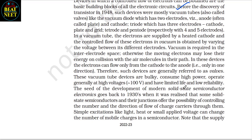In a vacuum tube, the electrons are supplied by a heated cathode and controlled flow of these electrons in vacuum is obtained by varying the voltage between its different electrodes. Vacuum is required in the inner electrode space, otherwise the moving electrons may lose their energy on collision with air molecules. Electrons can flow only from cathode to anode, that is only in one direction; therefore such devices are generally referred to as valves. These vacuum tube devices are bulky, consume high power, operate generally at high voltages (approximately 100 volts), and have limited life and low reliability.